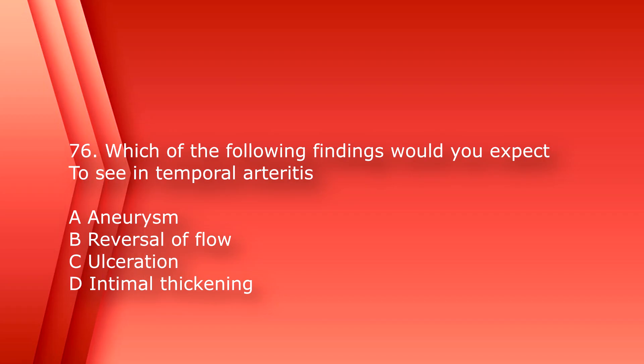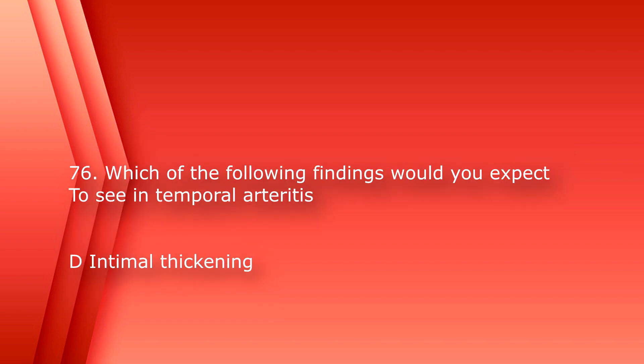All right, welcome back. Continuing on, number 76: which of the following findings would you expect to see in temporal arteritis? A. Aneurysm. B. Reversal of flow. C. Ulceration. Or D. Intimal thickening. The answer is D. Intimal thickening.